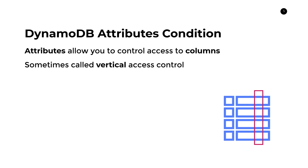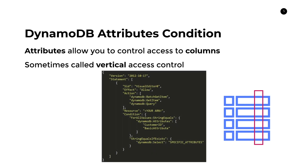Here's what an IAM policy for vertical access control looks like. The actions remain the same — BatchGetItem, GetItem, and Query. But the condition section changed. We still have ForAllValues:StringEquals, but this time the condition key is DynamoDB:Attributes, and it takes an array — we're saying we want to give access to both customer ID and the basic attribute. A pro tip: you always need to include the partition key, which in this case is customer ID, otherwise you may get an error.